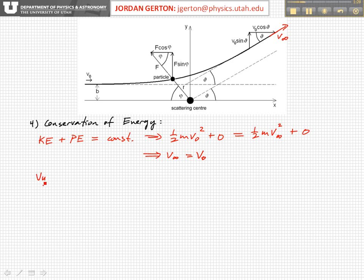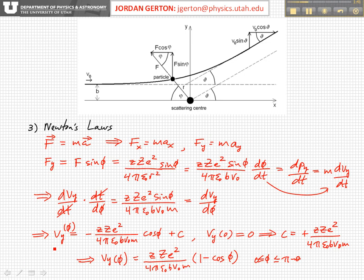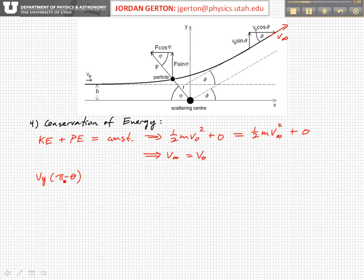So, that means that the y component of the velocity is a function of phi. It's a function of phi, and it's equal to this. So, at pi minus theta, when phi is equal to pi minus theta, then this is equal to v infinity times sine of theta, which is, as we found, v naught times sine of theta. So, the y component of the velocity after the collision is just equal to v naught sine theta. So, this allows us to relate essentially theta and phi.